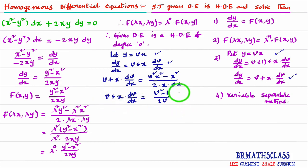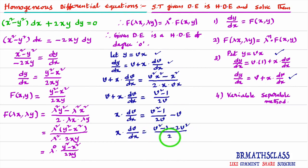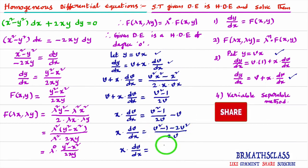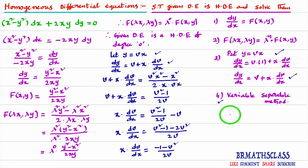We observe x terms with dx and v terms with dv, so we solve this using the variable separable method. To solve homogeneous differential equations, you must know how to solve by variable separable method. We separate x variables (dx) and v variables (dv) on different sides.